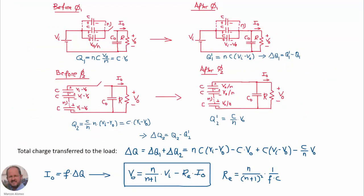The total charge transferred into the load is delta q1 plus delta q2. Operating on this expression and taking into account that the average output current is the frequency times the total charge, we can obtain the final expression for the output voltage as a function of the average output current. The ideal gain is n divided by n plus 1, so it's a fractional gain, and the equivalent resistance Re is given by n over (n+1) squared times 1 over fC.